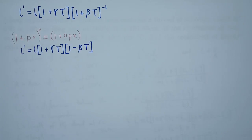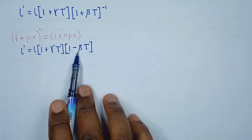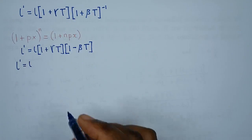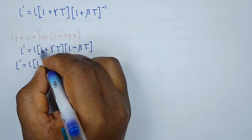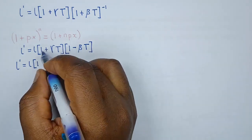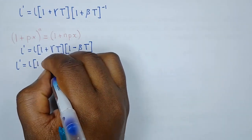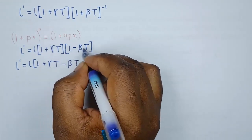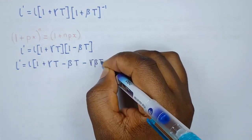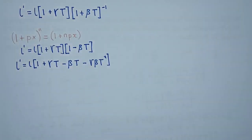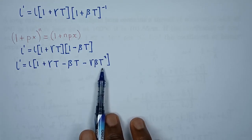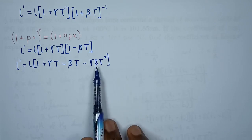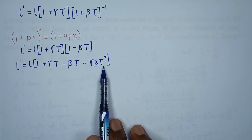Expanding these two brackets gives L prime equals L times (1 plus gamma T minus beta T minus gamma beta T squared). The term gamma beta T squared gives a very small, negligible value approaching zero, so we remove it. Hence L prime equals L times (1 plus (gamma minus beta) T).